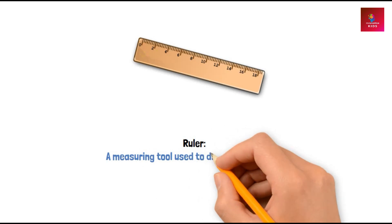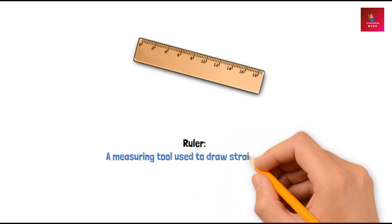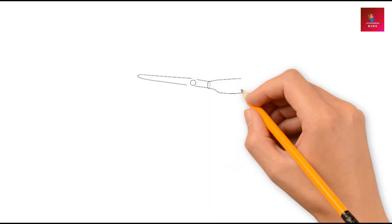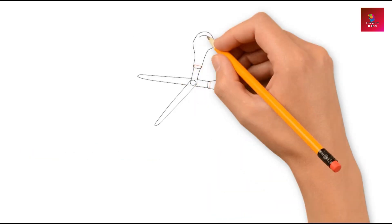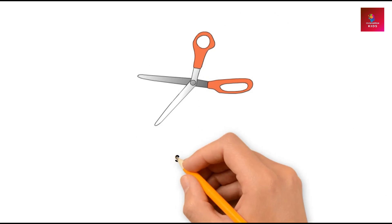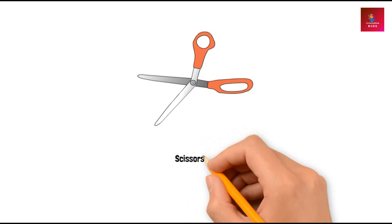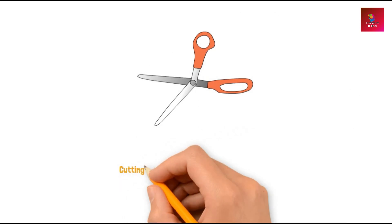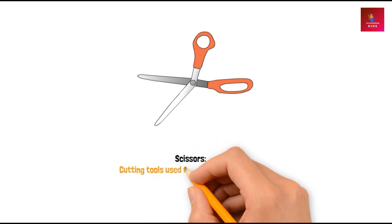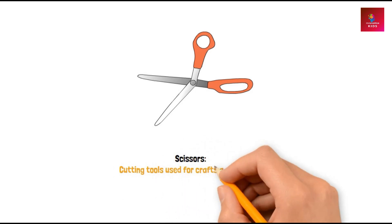Ruler: A measuring tool used to draw straight lines. Scissors: Cutting tools used for crafts and projects.